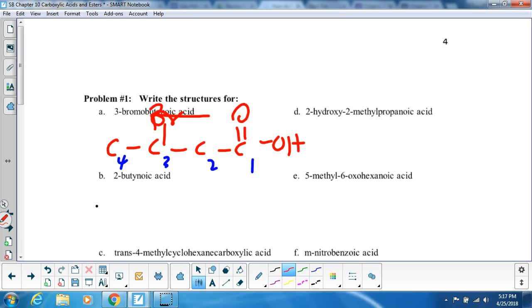Alright, how'd you do? Let's go down to letter B, 2-butyenoic. What do you know with butyne? Well, it's a triple bond someplace, so butyne means 4, oic acid means C double bond O